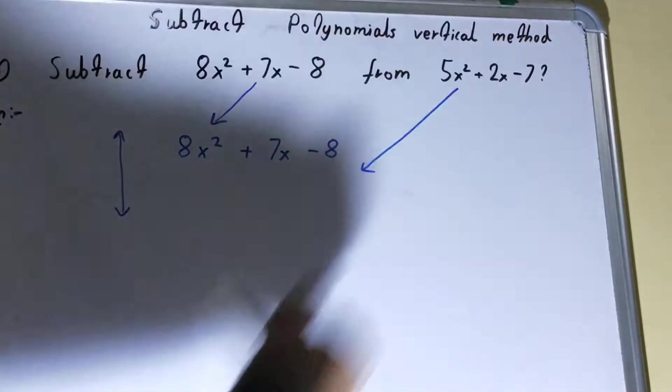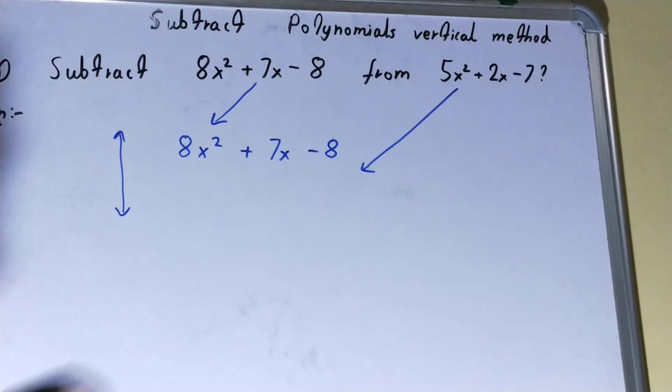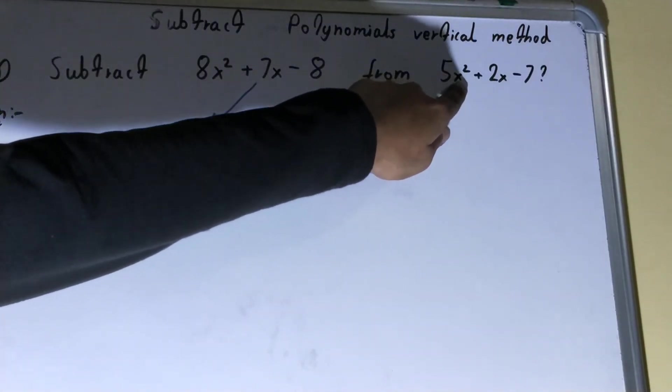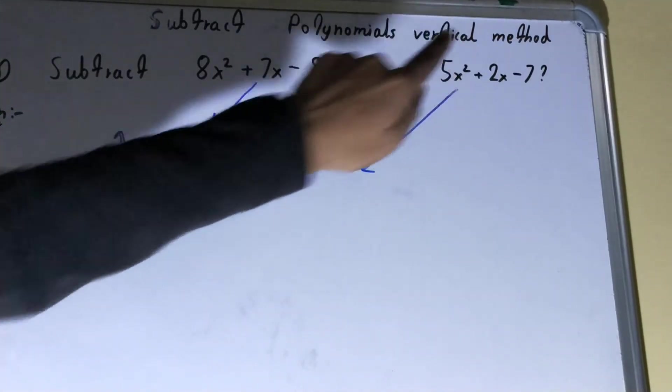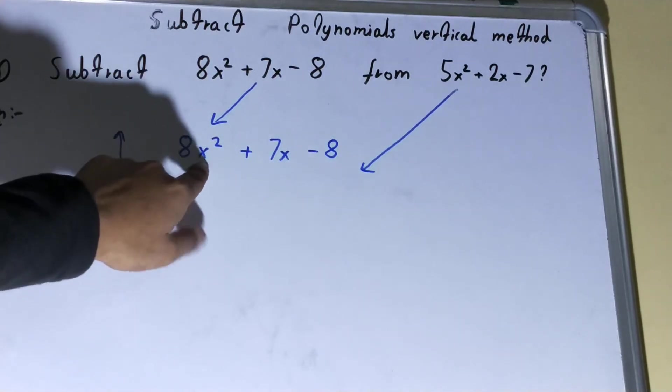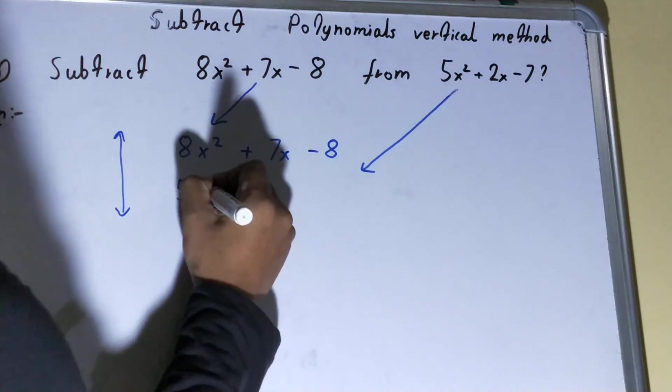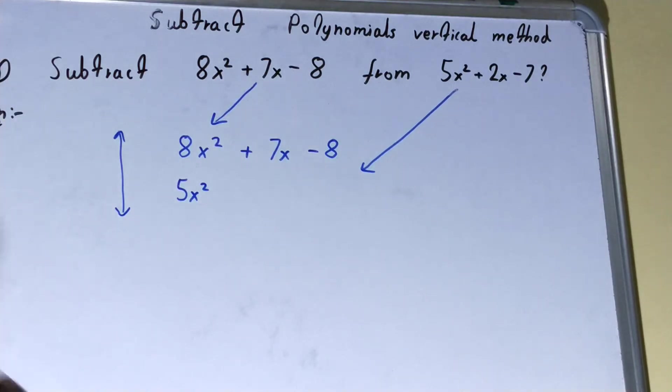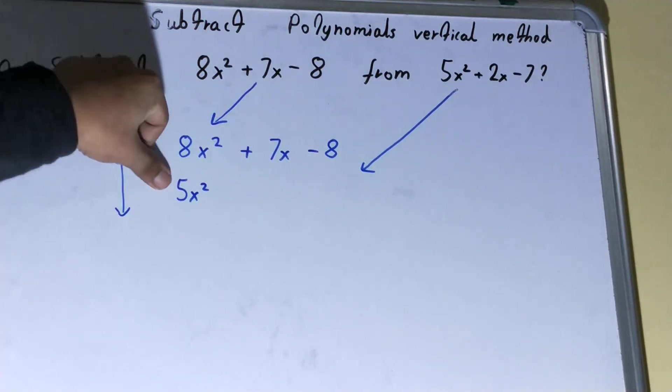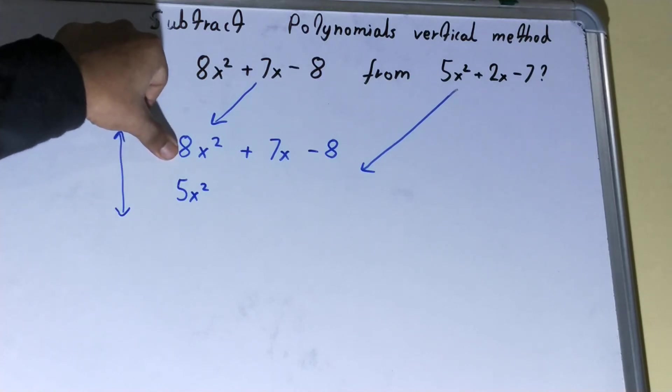You have to check each term's power. If this is x², then it should be placed just below the x² term. So 5x² will come just below the 8x². You should match them—you can only place terms below like terms.